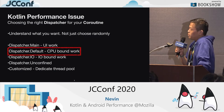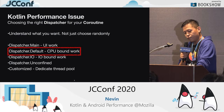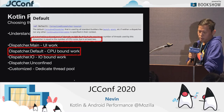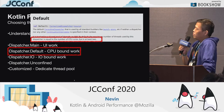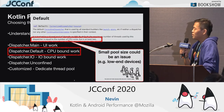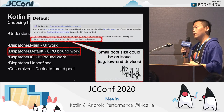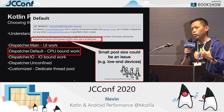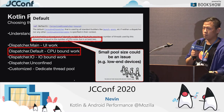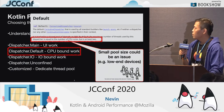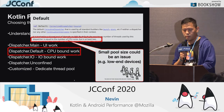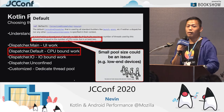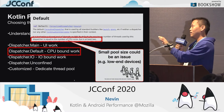We have an issue with the default dispatcher. By definition, the thread pool size of the default dispatcher is the number of CPU cores, or two, depending on which one is larger. But on low-end devices, sometimes we only have two cores. So a small pool size could be an issue because your task will run after other tasks finish, making it longer than expected. On high-end devices like Pixel phones it's fine, but on Samsung S5 and S6 it's going to be an issue. This especially affects our library initializations, since many libraries put their initialization in application onCreate.